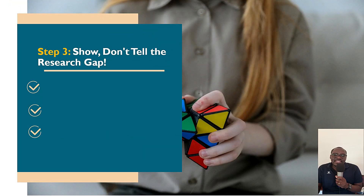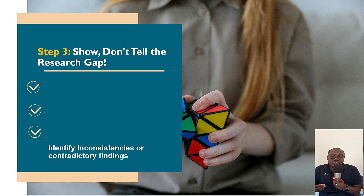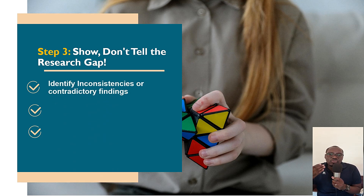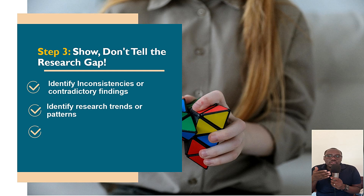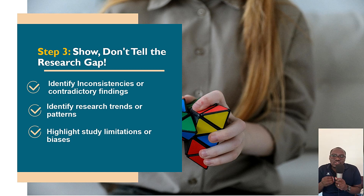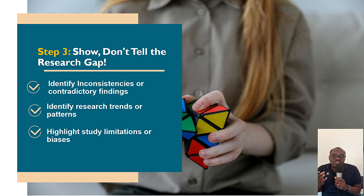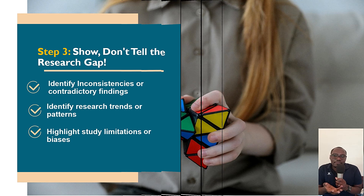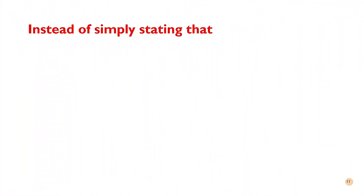Step number three: instead of just stating the research gap, you need to demonstrate it. To demonstrate the research gap, first, show the inconsistencies or contradictions in previous research. Second, show the patterns and trends of previous research to identify a gap. Third, identify the limitations and biases of previous research. When you do those three things, you will be able to demonstrate a research gap. Now let's look at how not to write the research gap.